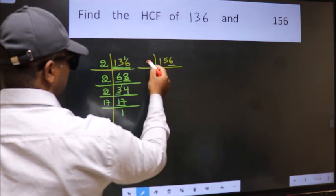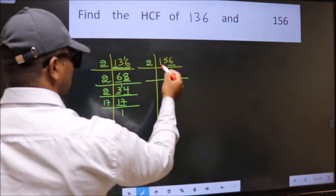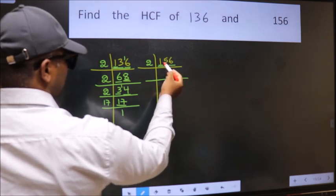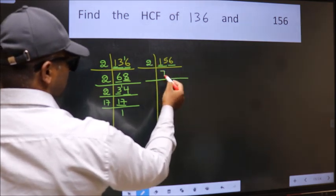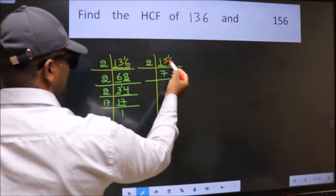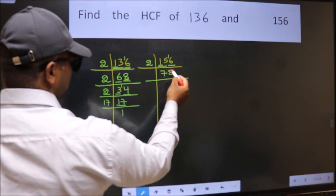Last digit 6 is even, so take 2. First number 1 is smaller than 2, so take the two numbers 15. A number close to 15 in the 2 table is 14. 15 minus 14 is 1, carried forward makes 16. When do we get 16 in the 2 table? 2 times 8 is 16.